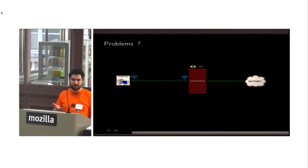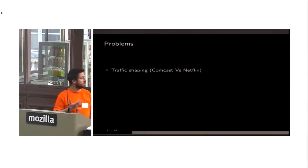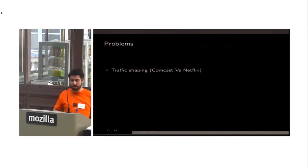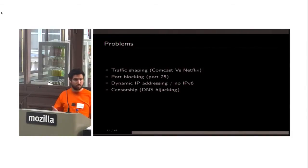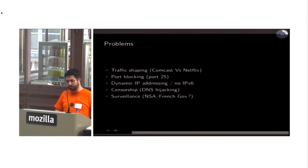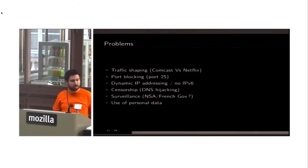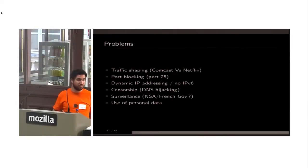You have to trust your ISP to have a normal internet life, but most of the time you shouldn't. Among the problems commercial ISPs show: they do traffic shaping, port blocking, they use dynamic IP addressing, there's no IPv6, there is censorship either legal or for commercial interest, and obviously surveillance from the NSA, the French government, or any legal or not-legal entity, and they use your personal data for commercial purposes.